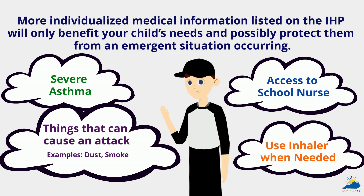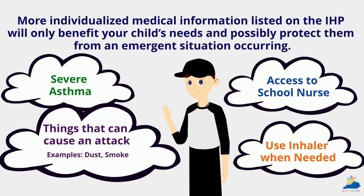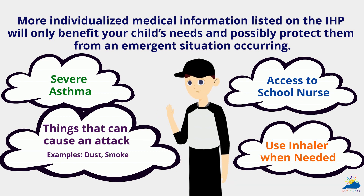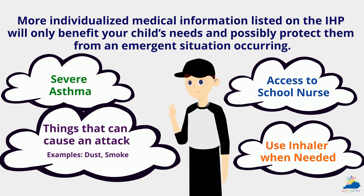More individualized medical information listed on the IHP will only benefit your child's needs and possibly protect them from an emergent situation occurring — like severe asthma, access to the school nurse, use of an inhaler when needed, and things that can cause an attack like dust and smoke.